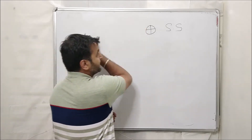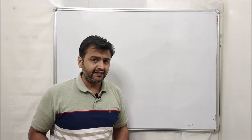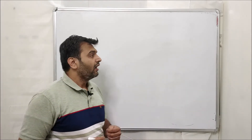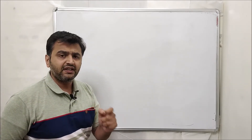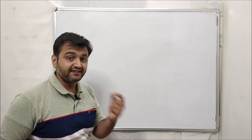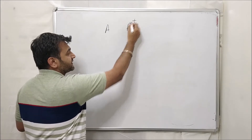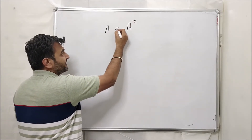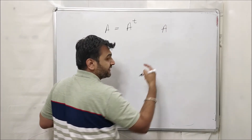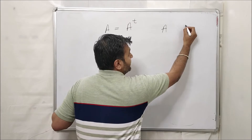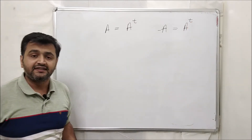So these are the two things I'll cover today. First, let's go for the existence part — can we actually write A as a sum of a symmetric and skew-symmetric matrix? The answer is yes. But before that, let me quickly recall: a square matrix A is symmetric if A transpose equals A, and it is skew-symmetric if A transpose equals minus A.